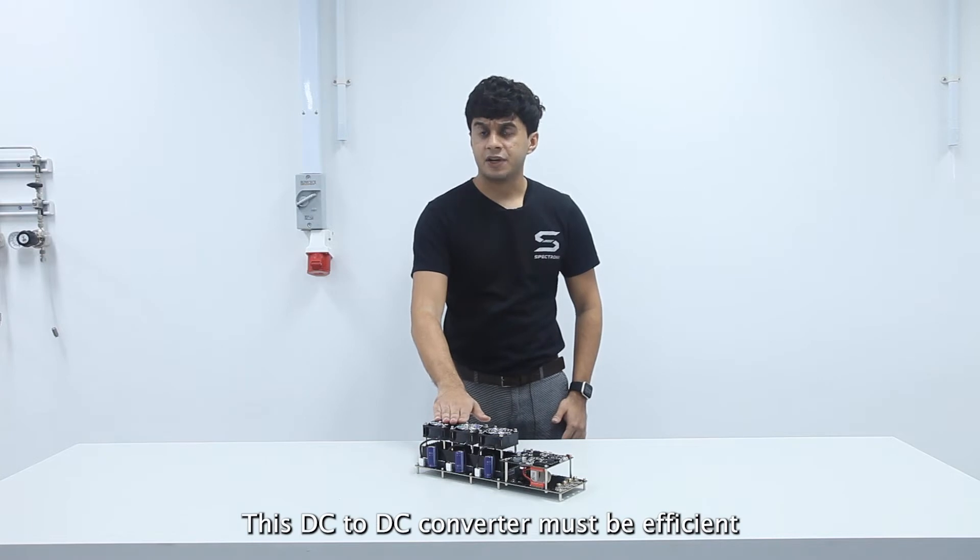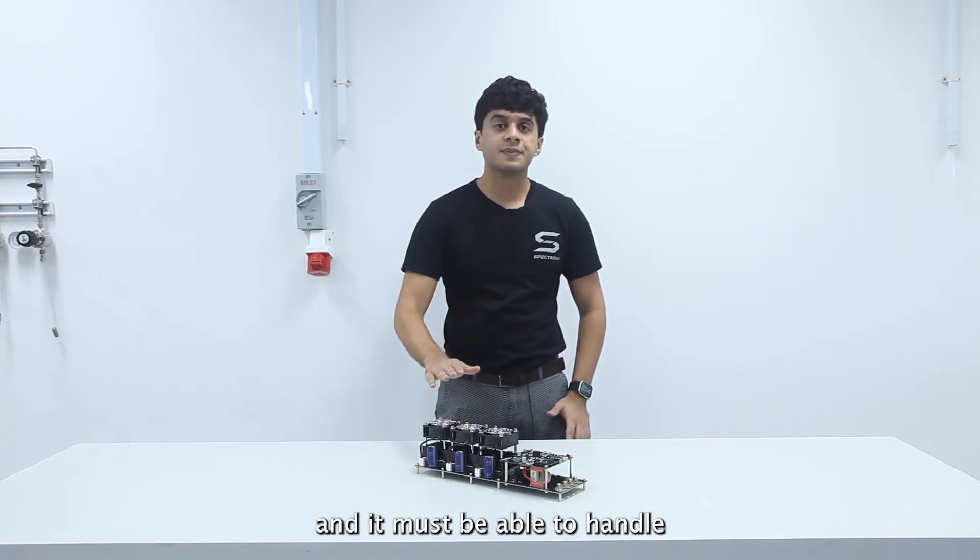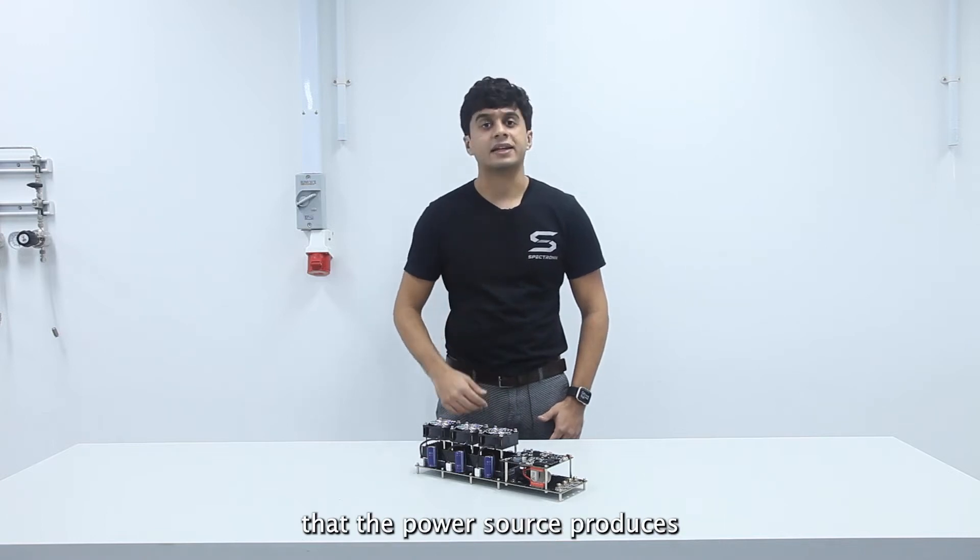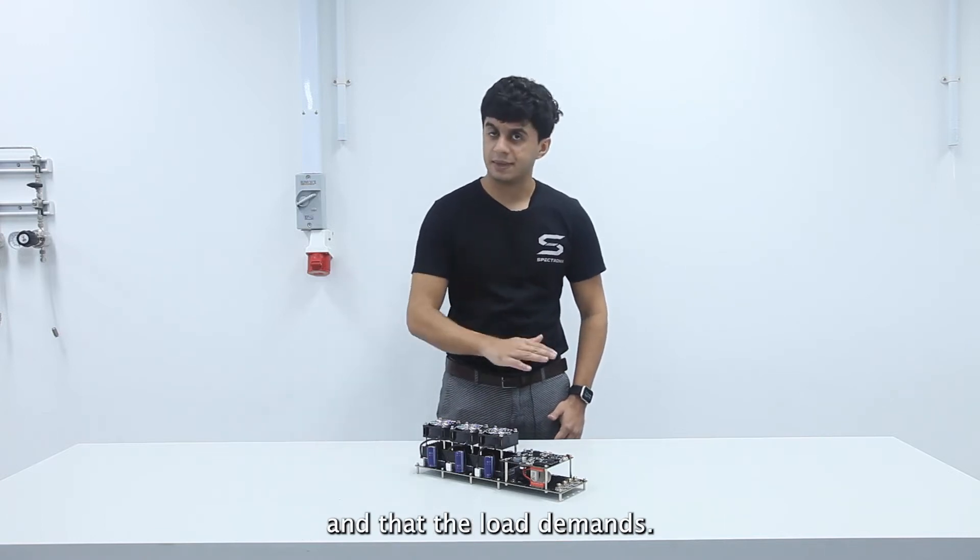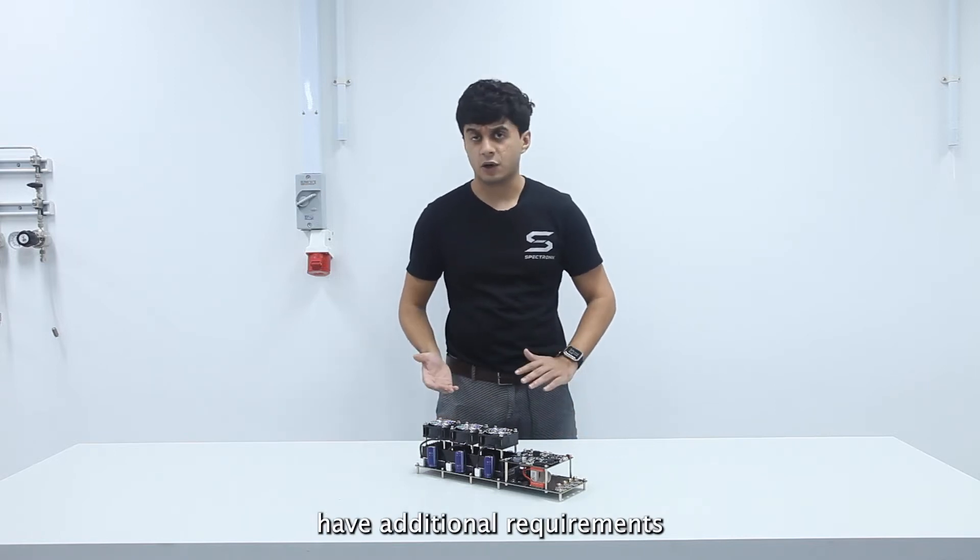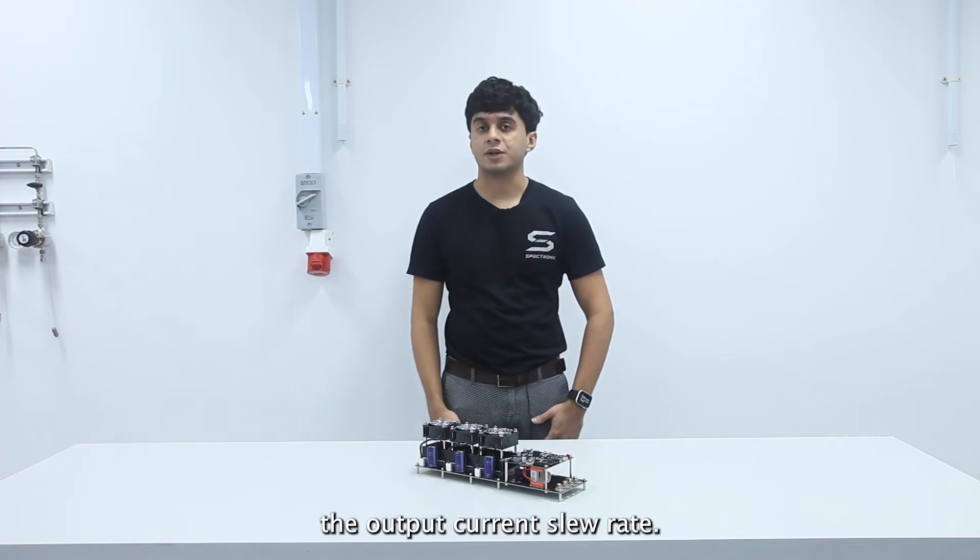This DC to DC converter must be efficient and it must be able to handle the input and output voltages and currents that the power source produces and that the load demands. Furthermore, some sources such as hydrogen fuel cells have additional requirements such as limiting the output current slew rate.